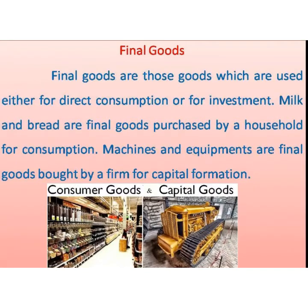Final goods are those goods which are used either for direct consumption or for investment. For example, milk and bread are final goods purchased by a household for consumption, whereas machines and equipment are final goods bought by a firm for capital formation.